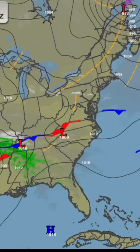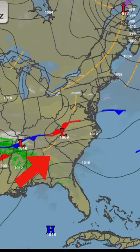Fourth, wind speeds. Are the isobars close together? That usually means strong winds and possible turbulence. Further apart equals lighter winds.